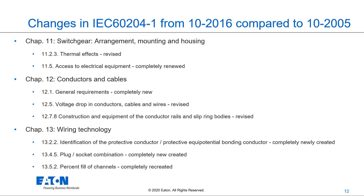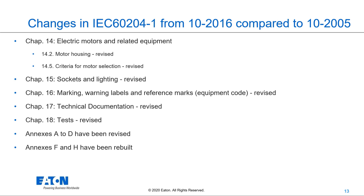Chapter 12, conductors and cables: the general requirements are completely newly written. Chapter 13, wiring technology: several chapters were revised. Chapter 14, electrical motors and related equipment: measurements of the motor housing and criteria for motor selection were revised, and there is now a link to new high-efficiency motors. Chapter 15, sockets and lighting, and Chapter 16, marking, warning labels, and reference marks, were also revised. Chapter 17 saw a major revision of technical documentation, and Chapter 18, the tests, was also revised. Annexes A to D were revised, and Annexes F and H are completely newly rebuilt.